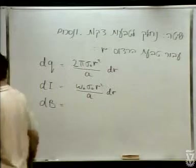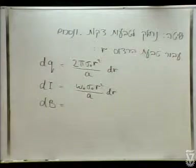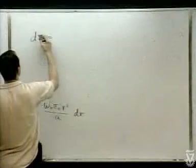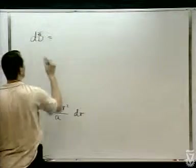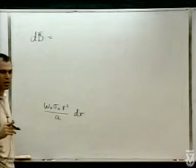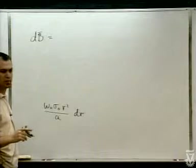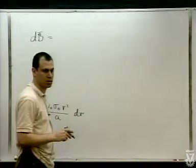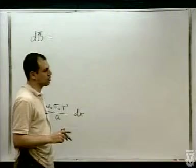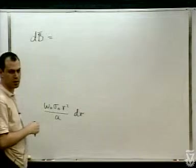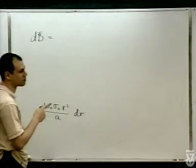אז אם זה הזרם, מה השדה? השדה — אנחנו כבר קיבלנו את התוצאה הזאת. אנחנו יודעים ששדה של טבעת במרכז זה: שני פאי DI חלקי RC. The current you started dictating is Biot-Savart, but we already have this result.